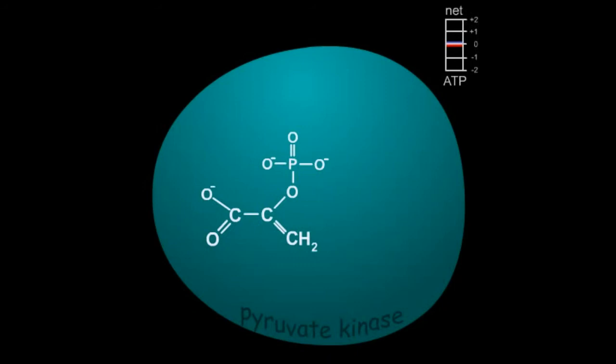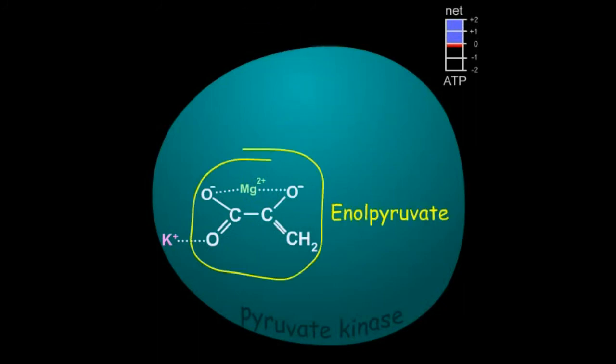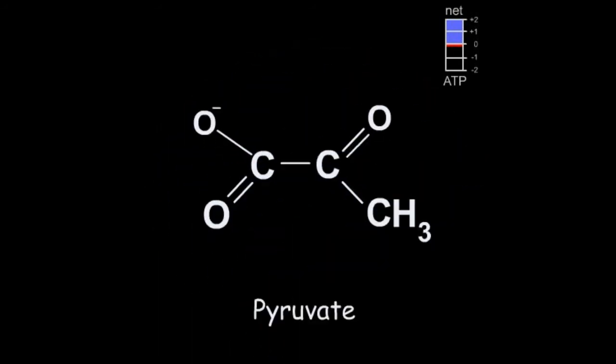The final reaction of glycolysis is also the second reaction in which free energy is captured in the form of ATP. Here, the synthesis of ATP is driven by the high negative free energy of hydrolysis of phosphoenolpyruvate. In the first step of this reaction, a phosphoryl group is transferred from phosphoenolpyruvate to ADP to form enolpyruvate. The enolpyruvate then tautomerizes to form the reaction product pyruvate. It is a highly exergonic reaction and two ATP are formed.